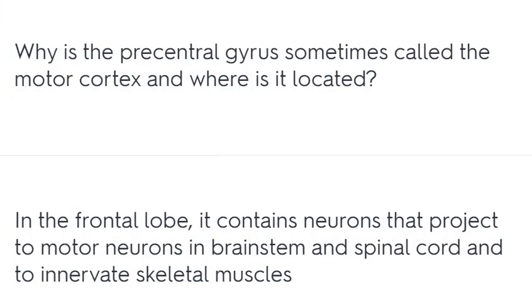Why is the precentral gyrus sometimes called the motor cortex, and where is it located? It is located in the frontal lobe. It contains neurons that project to motor neurons in the brainstem and spinal cord to innervate skeletal muscles.